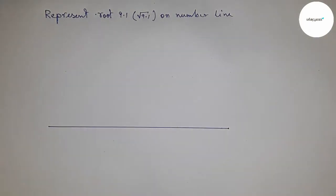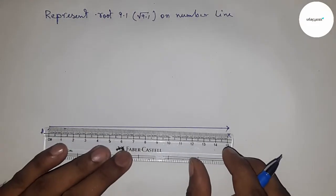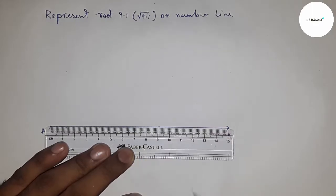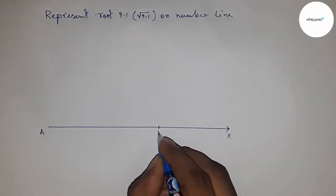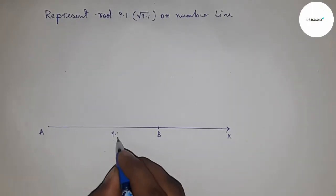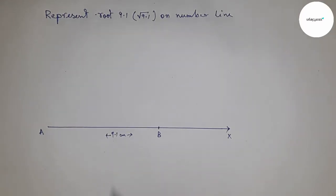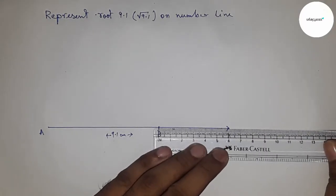First of all, draw a line of any length. This is the AX line. Next, take a length of 9.1 centimeters by scale and mark point B. So AB is 9.1 centimeters.